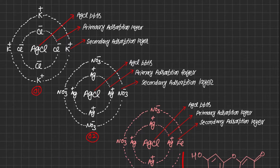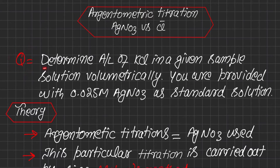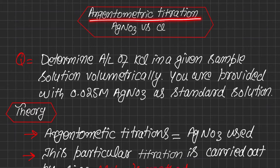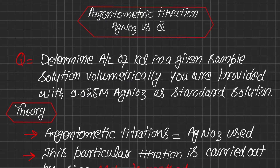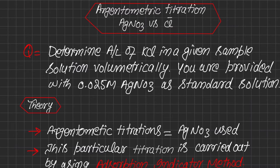The question of this titration is to determine the amount per liter of KCl in a given sample solution volumetrically. You are provided with 0.025 molar silver nitrate as standard solution. This is an argentometric titration — those titrations in which silver nitrate is used are called argentometric titrations, as the Greek word for silver is 'argento.' KCl is our analyte whereas 0.025 molar silver nitrate is our standard solution.